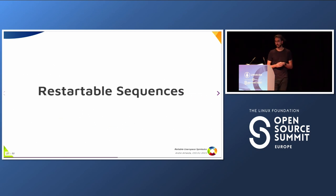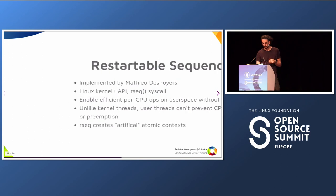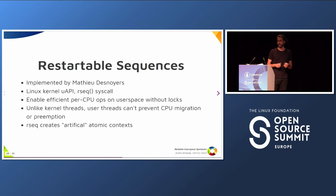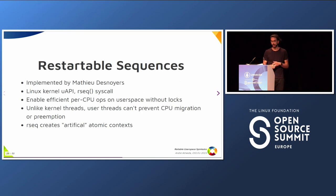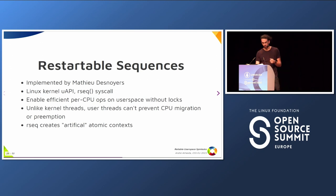Now I want to introduce restartable sequences. Restartable sequences were created to solve a kind of similar problem. The idea was from Paul Turner, but the implementation is from Mathieu. It is a Linux kernel user API implemented by the rseq syscall. This enables user space to have efficient per-CPU operations without locks. User threads cannot prevent CPU migration or preemption, so rseq creates an artificial way of having atomic context in user land.